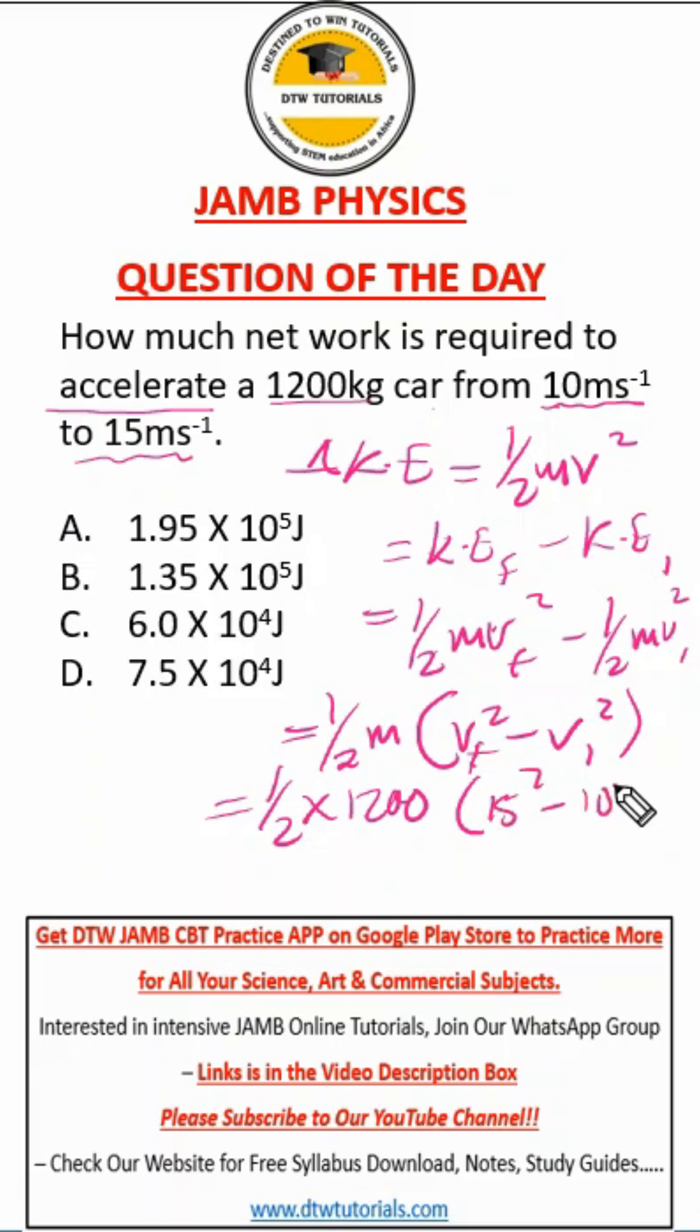Then in parentheses 15 squared minus 10 squared. What is 15 squared? That's 225.